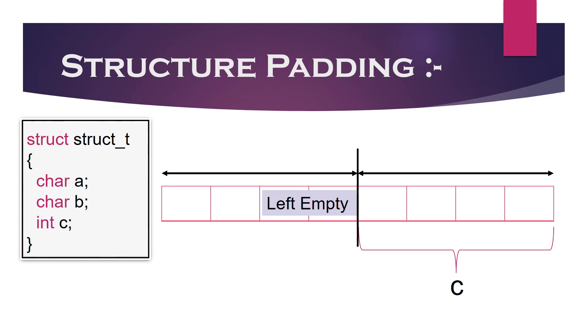By applying the padding, now you can see two empty bytes are added and integer member is shifted to the next aligned byte. By this rearrangement, now we need only one CPU cycle to read integer member C.